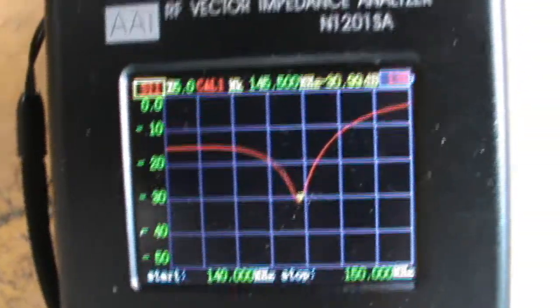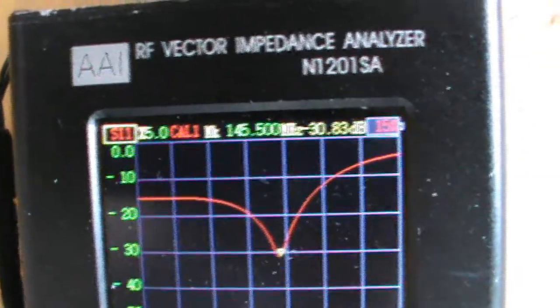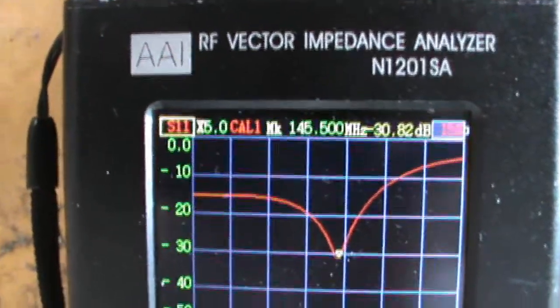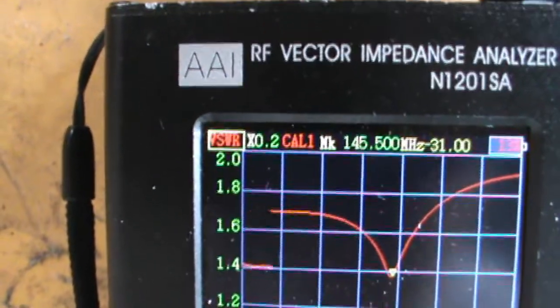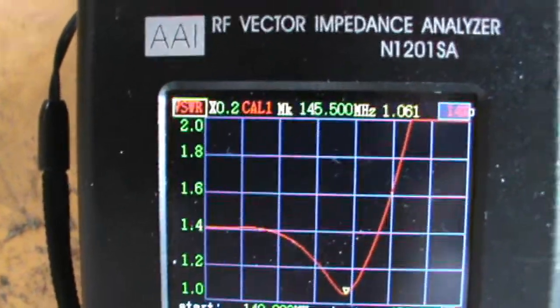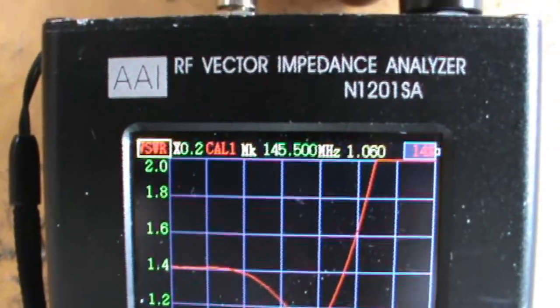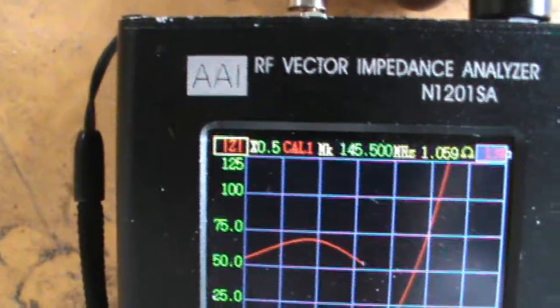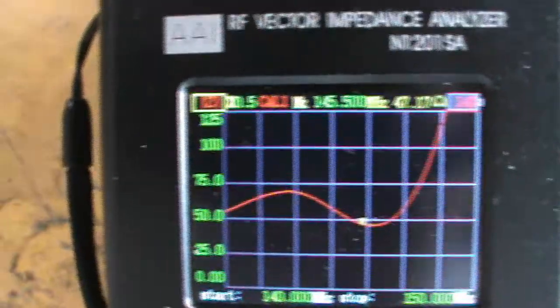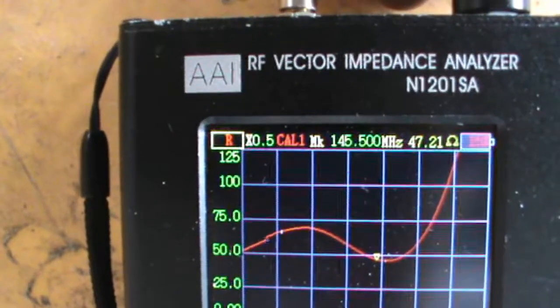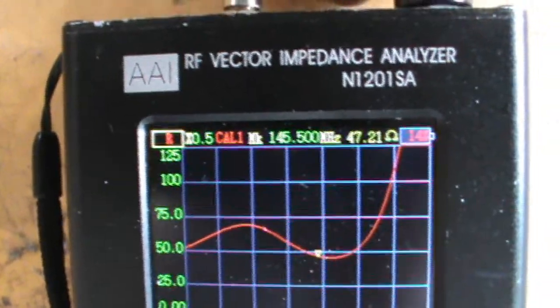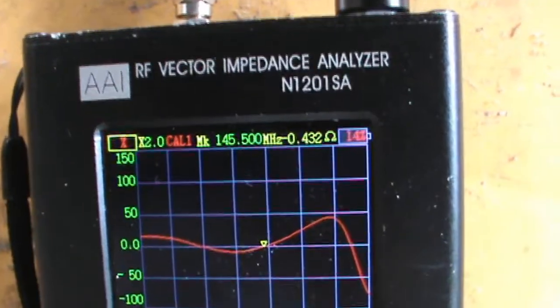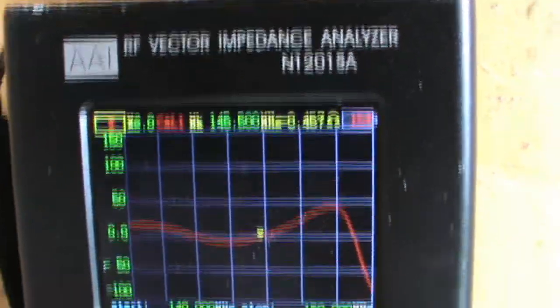This is the S11 curve at 30.83 dB or 31 dB at 47.2 ohms. Resistive load is 47.2 ohms and reactance is minus 0.465.